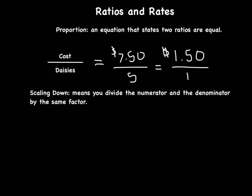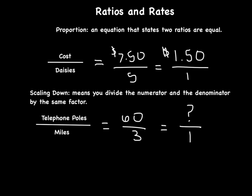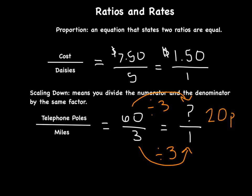Here's another example: telephone poles over miles. Let's say we had 60 telephone poles in a 3-mile range and wanted to find the unit rate — how many poles per mile. How did I get from 3 to 1? I divided by 3. So I do the same to the top: 60 divided by 3 is 20 poles. So the unit rate is 20 poles for every mile.